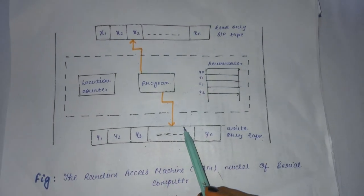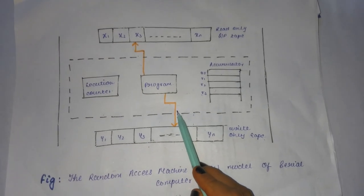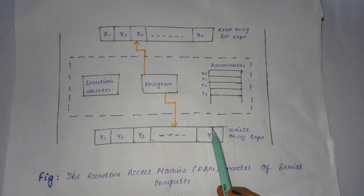And same with the output tape, every time the output is written to the output tape, the output head, this is the output head, it advances by one square.